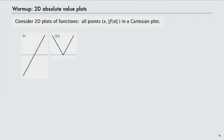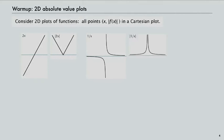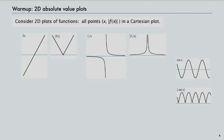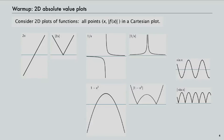For example, the function 2x is just a line, but the absolute value of 2x is a V — when it hits zero, it bounces back up again. Or 1 over x is a familiar hyperbola, but the absolute value of 1 over x is a little inverted funnel. Sine x goes up and down, but the absolute value of sine x keeps bouncing off the origin. And 1 minus x squared is a parabola.